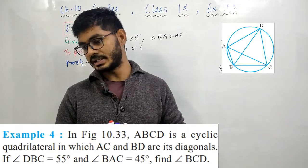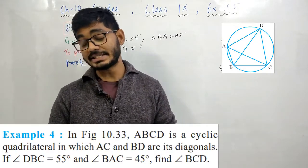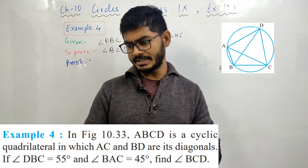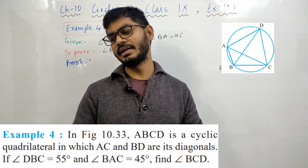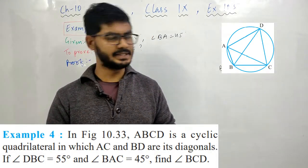In figure 10.33, ABCD is a cyclic quadrilateral in which AC and BD are its diagonals. If angle DBC is equals to 55 and angle BAC is equals to 45, find angle BCD.